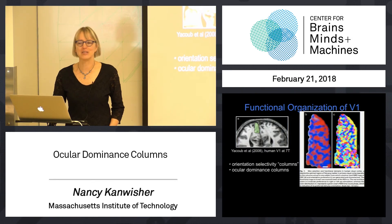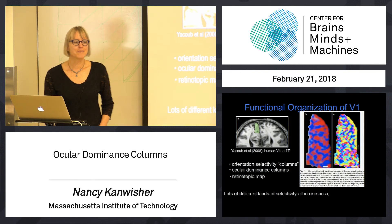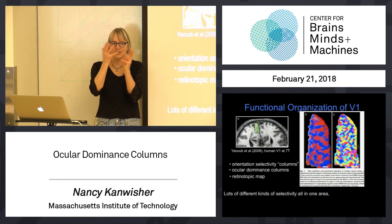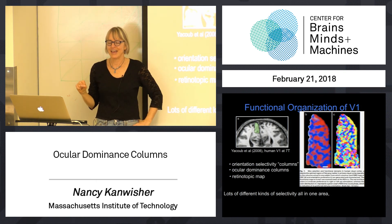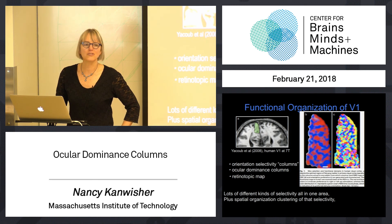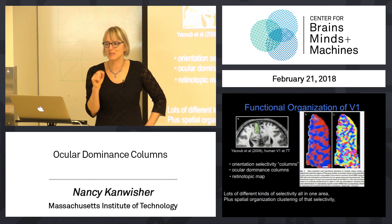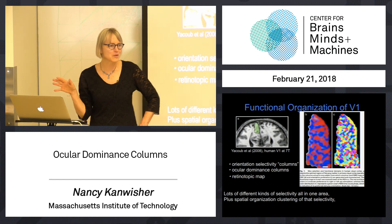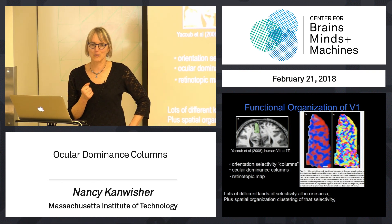There are several mammalian species with perfectly good vision that don't have them. So these are facts of the human brain and macaque brains and lots of brains, but they're not universal and they're probably not computationally necessary. The bottom line of all of this is there are lots of different kinds of functional organization all on top of each other in primary visual cortex: there's retinotopy, there's orientation maps, and there's ocular dominance columns or stripes. This is a general property of the cortex — you get spatial organization in which nearby neurons have similar functional properties, and you see that all over the cortex.